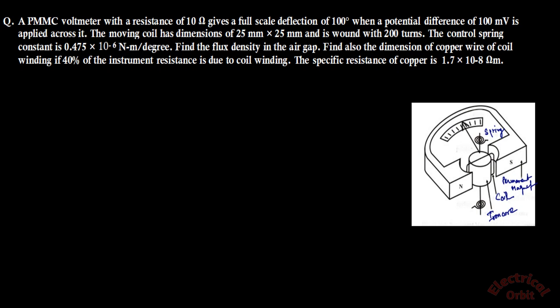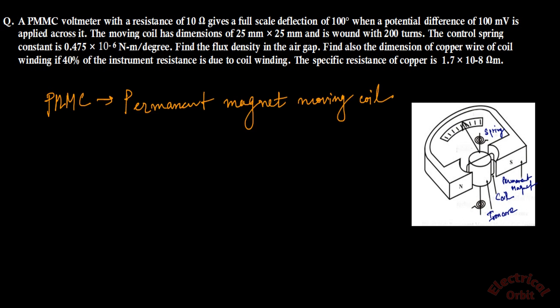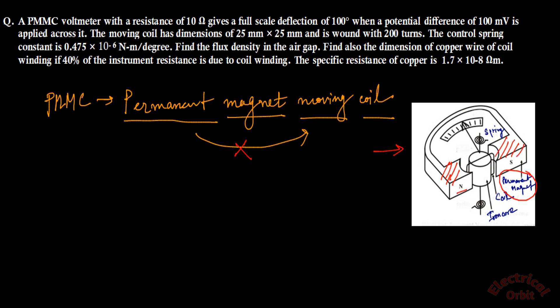We are solving a problem regarding the PMMC instrument. The full form of PMMC is Permanent Magnet Moving Coil. Students generally make a mistake saying 'Permanent Moving Magnet Coil,' which is wrong. In this PMMC instrument, there is a permanent magnet with a North Pole and a South Pole, which is why it is called Permanent Magnet Moving Coil.